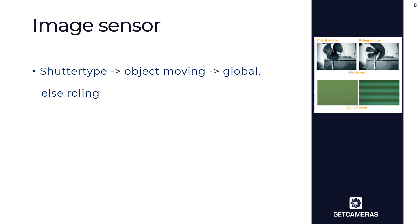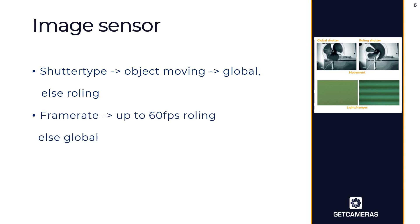In applications where the light is changing during those 50 milliseconds, you will also see bars in the image — as visible in the rolling shutter fan image below. That is why when you have movement it's better to go for a global shutter: all pixels open at the same time, giving you a true snapshot with no geometric distortion and no problems with light changes. As a rule of thumb, up to 60 fps a rolling shutter is possible, but for much higher frame rates you need a global shutter.